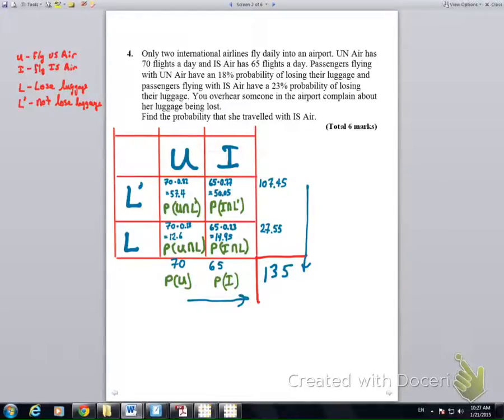But then we could also find conditional probabilities, and that's shown here. In this case, given that somebody lost their luggage, what's the probability that they flew IS Air? And that's the standard conditional probability algorithm. And instead of going to Bayes' theorem,